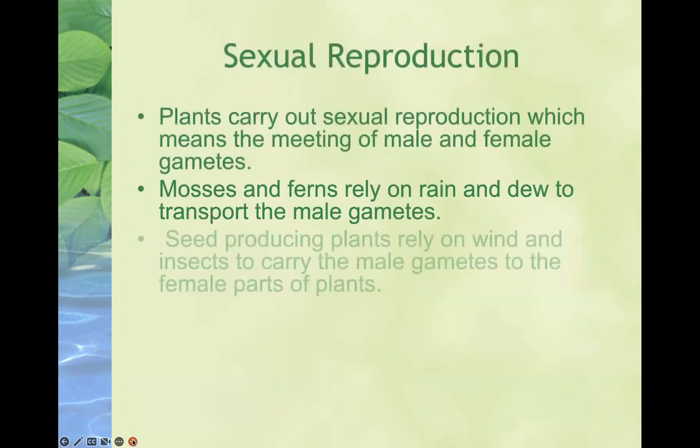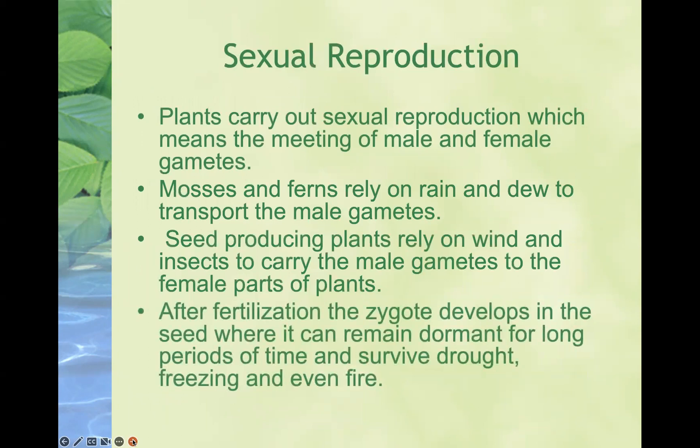Plants carry out sexual reproduction, which is basically the meeting of male and female sex cells — our gametes. Mosses and ferns rely on alternative methods for this meeting to take place, whereas other types of plants rely on pollinators to physically facilitate this process. Seed-producing plants rely on wind and insects to carry the male gametes to the female reproductive parts. After fertilization, the zygote develops in the seed, where the plant embryo is located and can remain for a long period of time.